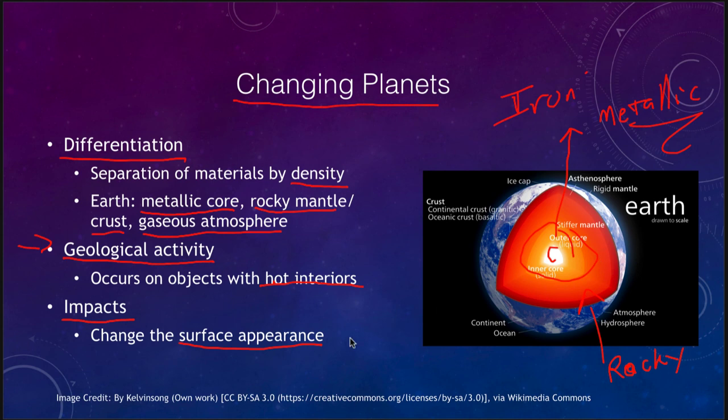Impacts can also change an entire planet. Large, massive impacts can essentially shatter a large object, and maybe the reason we actually have a large moon was because of a massive impact billions of years ago.